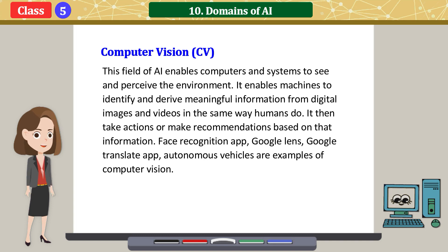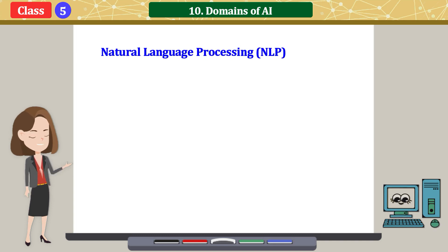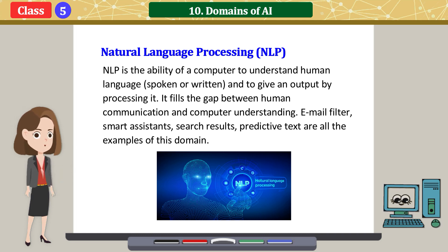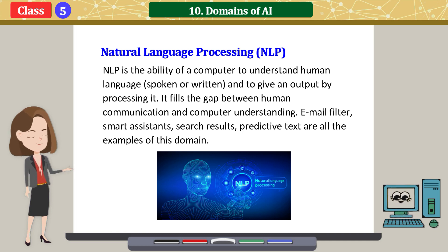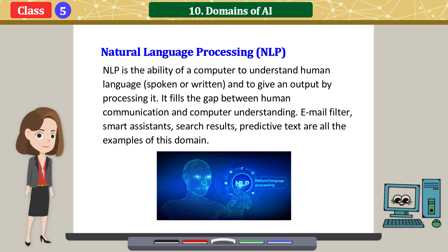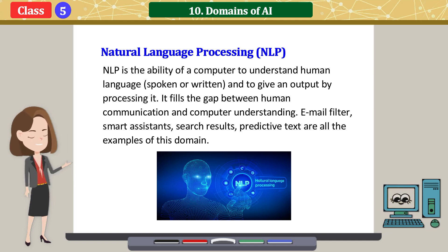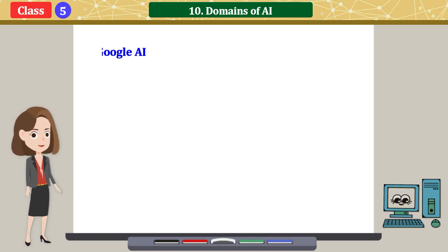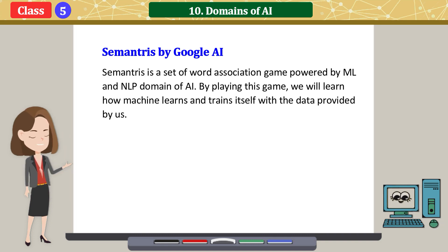Natural Language Processing, or NLP, is the ability of a computer to understand human language and to give an output by processing it. It fills the gap between human communication and computer understanding. Email filters, smart assistants, search results, and predictive text are all examples of the NLP domain.